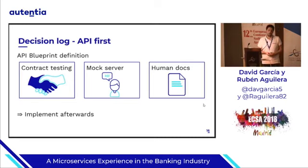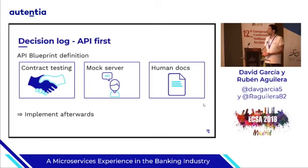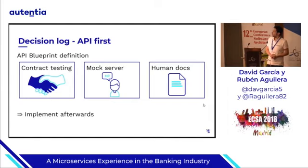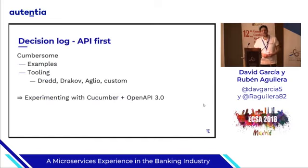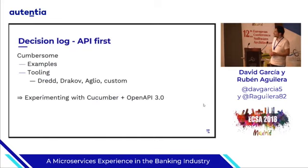With autonomy as the core principle, we had to make sure that teams could work in parallel without blocks. So we decided to go with an API-first strategy. The way it works is by first writing an API blueprint specification, and from there getting three products: contract testing, a mock server for consumers, and human documentation. Then the service is implemented afterwards. Developers complained this was cumbersome because of the tooling — many tools, some complex to use with particular corner cases. So now we are experimenting with Cucumber and OpenAPI.